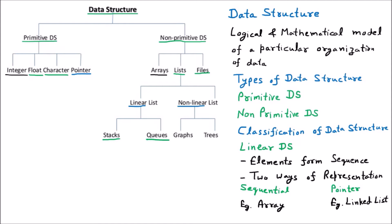To make you understand what a stack is, let us suppose we are having a few numbers: 7, 8, 6, 5. Before that, let us suppose we are having a few copies. Let us suppose this is a table. On this table, you are putting the first book, then the second book, then the third book, then the fourth book. So on the table, you are putting all the books — 1, 2, 3, 4. That means in this order you are stacking all the books.